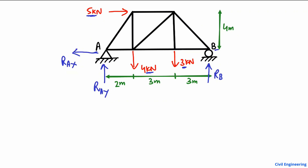The dimensions of this truss are given to us. We will start the problem by taking the summation of moments at any point equal to zero. Let's take the summation of moments at point A equal to zero, where clockwise moment is positive and anticlockwise moment is negative.